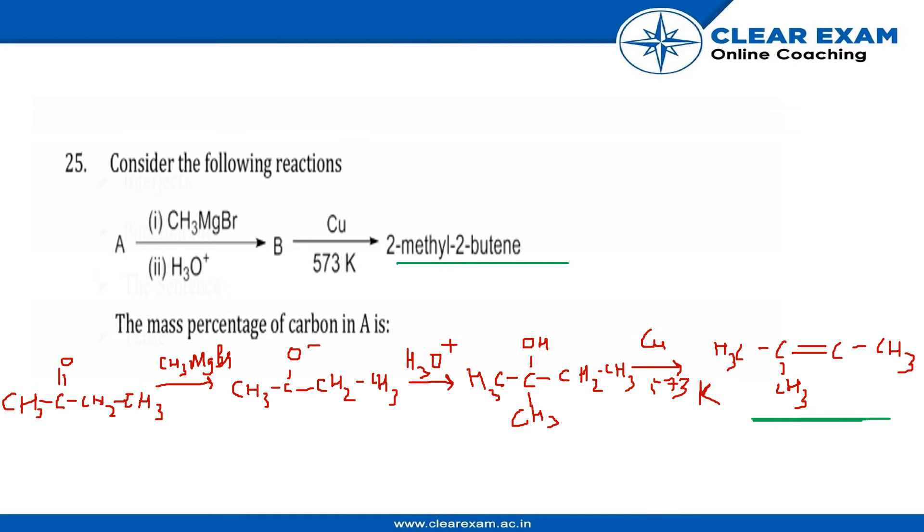Now we know that it had to react with copper at 573K to form this, and we know that the job of copper here is to form a double bond and remove water molecule in this case. So this must have been what the structure looked like before, where there is an OH group present.